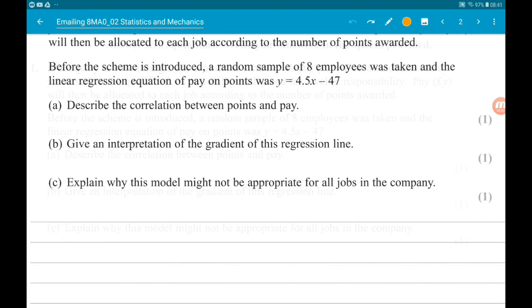Pay Y pounds will then be allocated to each job according to the number of points awarded. Before the scheme was introduced, a random sample of 8 employees was taken and the linear regression equation for pay on points was Y equals 4.5X minus 47.